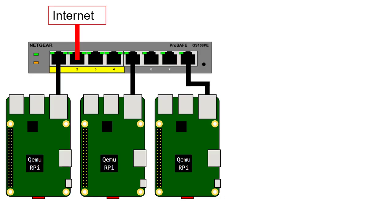At the end of video number eight, we had the topology and the network setup as shown in the diagram. We had three nodes — node 1, node 2, node 3 — QEMU Raspberry Pis, each connecting using its own separate Windows TAP adapters: VME1 on node 1, VME2 on node 2, and VME3 on node 3, into the Windows software bridge, which acted as a software switch. We were using internet connection sharing off of whichever network interface our internet was coming in on, wireless or wired, and sharing that with the network bridge.